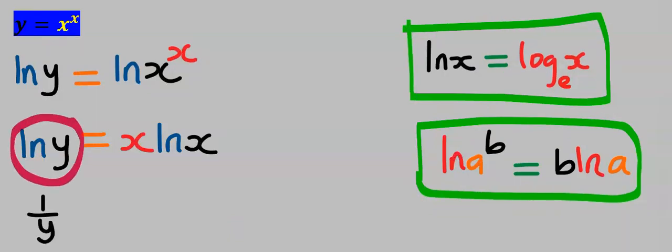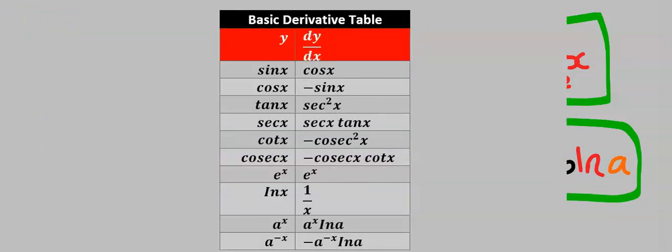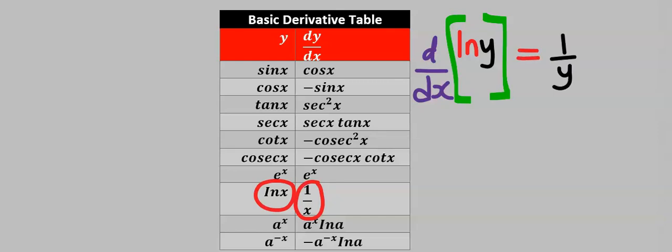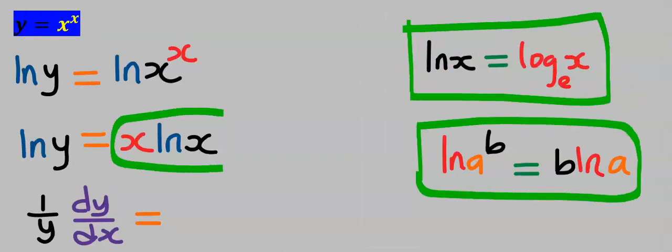Next, differentiate the natural log of y, and we have one over y. But because we differentiated y and not x, we multiply it by dy/dx according to the rule of implicit differentiation. Recall that from the basic derivative table, when you differentiate ln(x) you get one over x, but when you differentiate ln(y) you get one over y times dy/dx. This does not apply when you differentiate x.